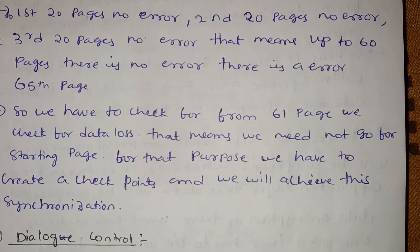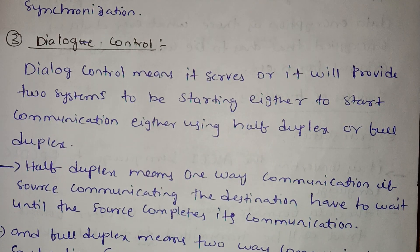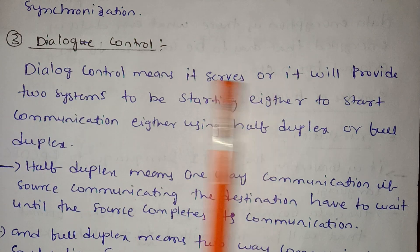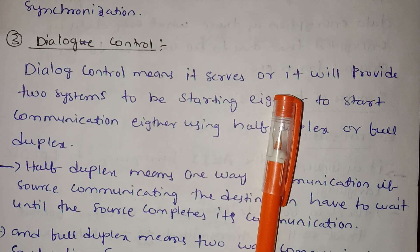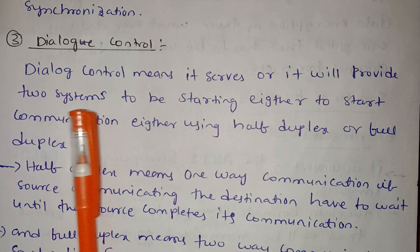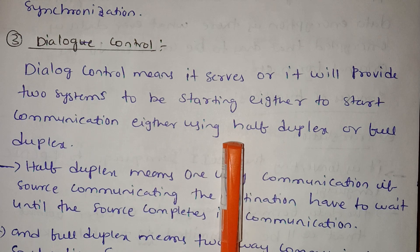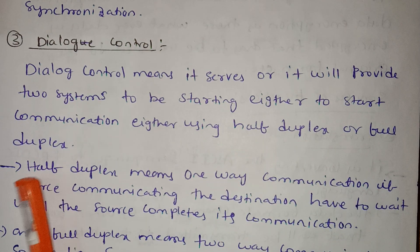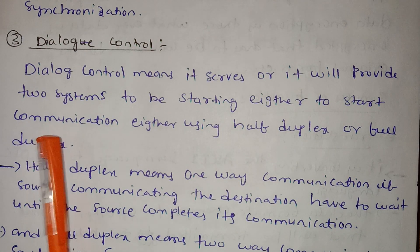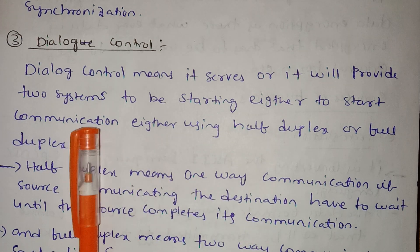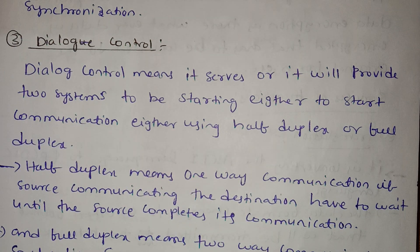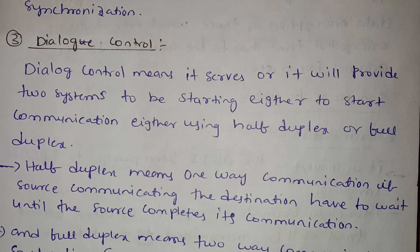What is the next service? Dialogue control. Dialogue control means it provides two systems to start communication, either using half duplex or full duplex.